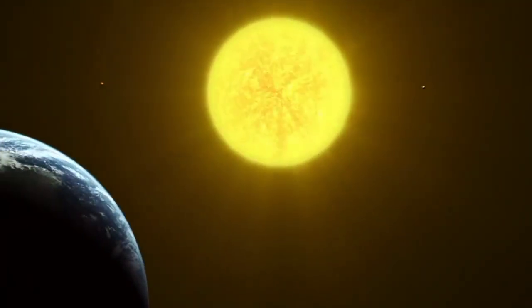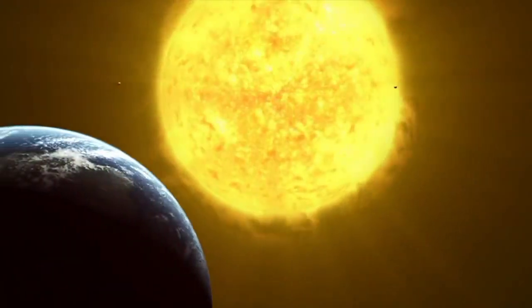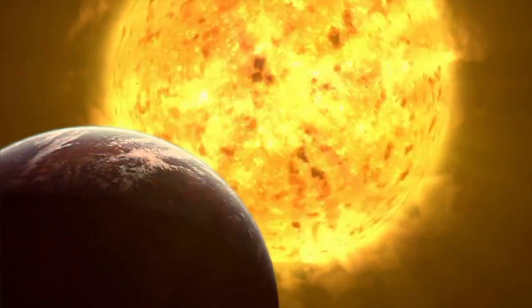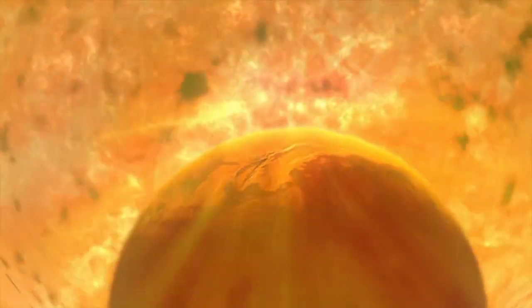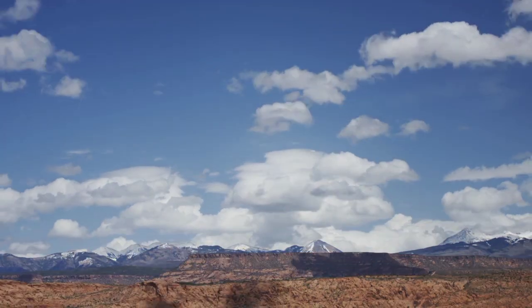But long before that happens, Earth will likely be uninhabitable anyway because of the evolution of the sun, which is expected to turn into a red giant in about 5 billion years. So the escape of the atmosphere is not the problem in the very long run.